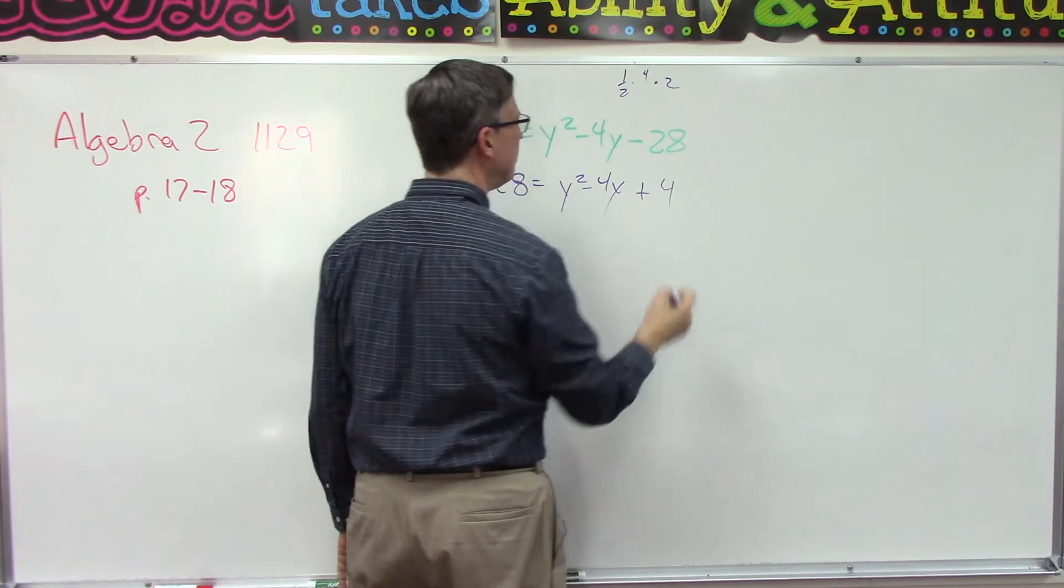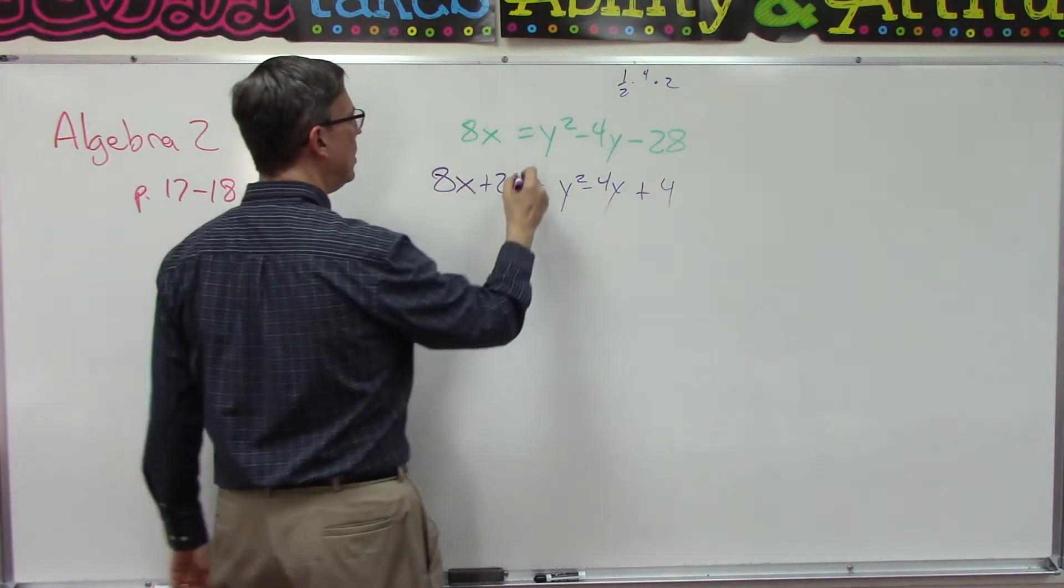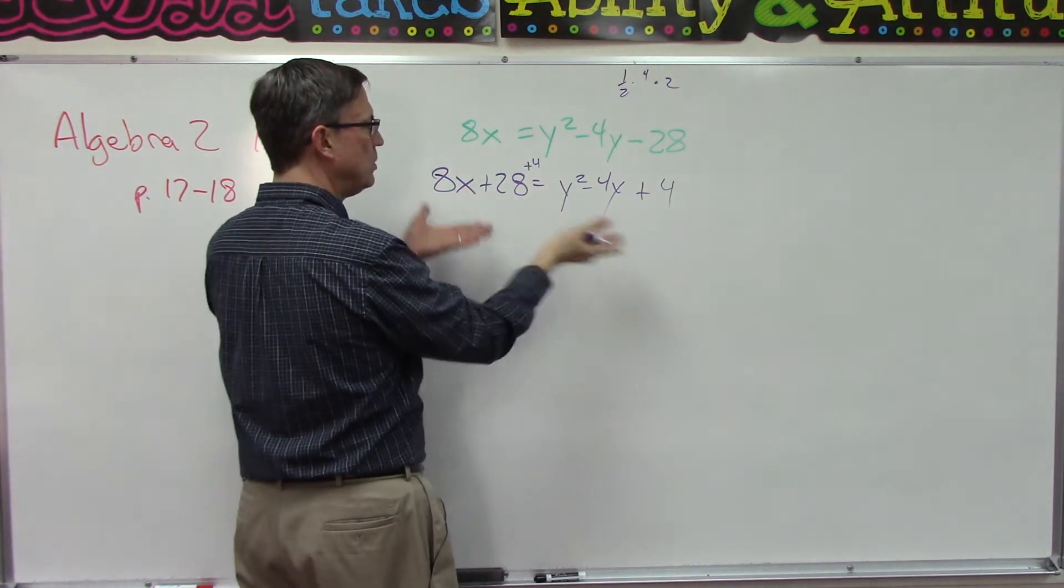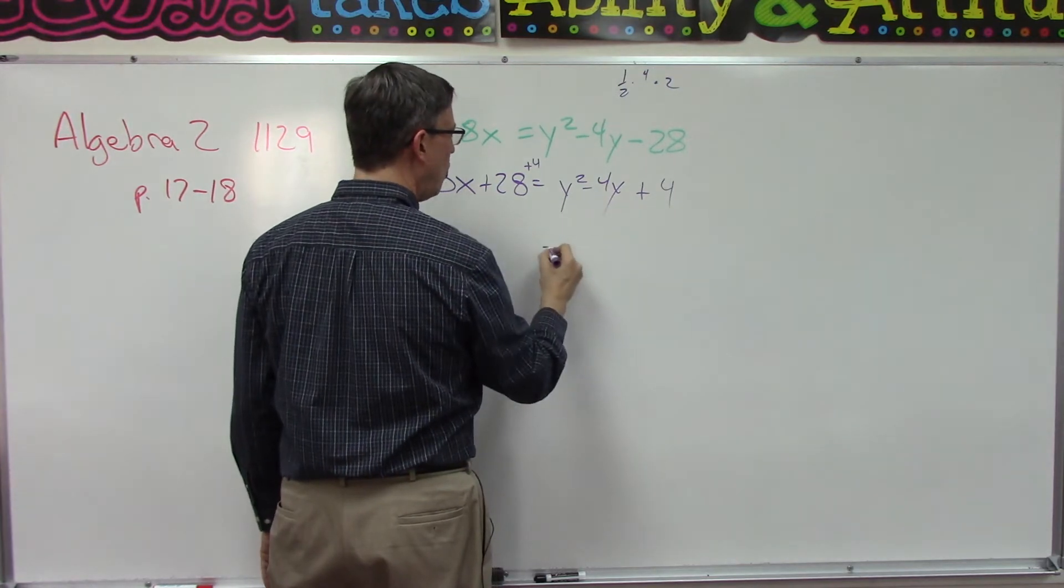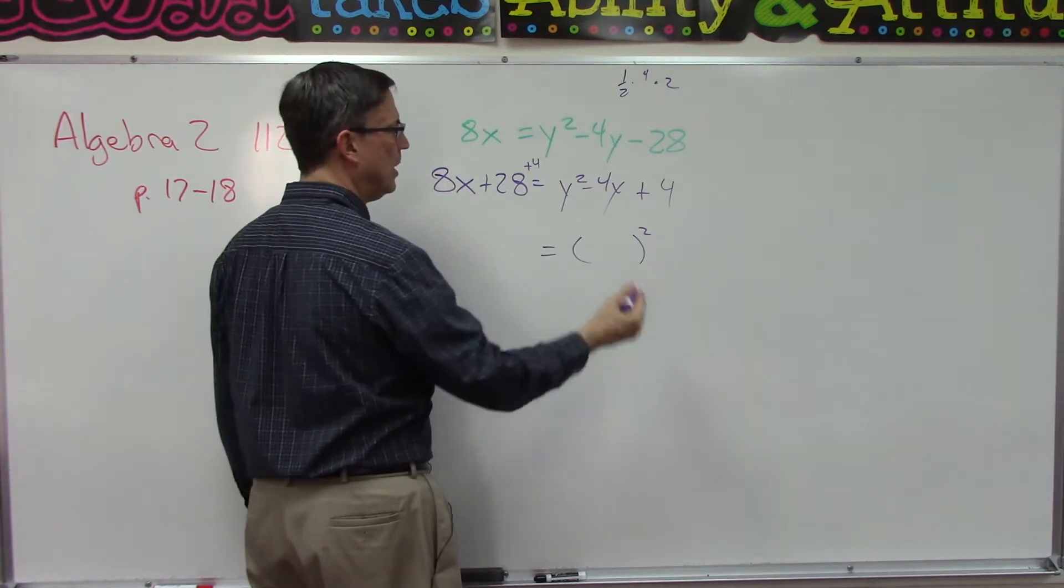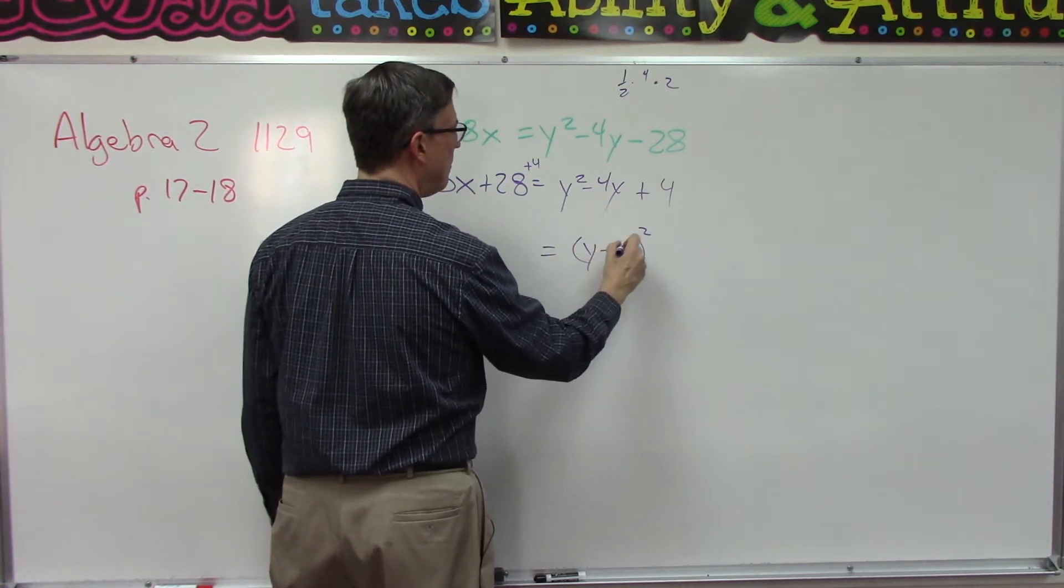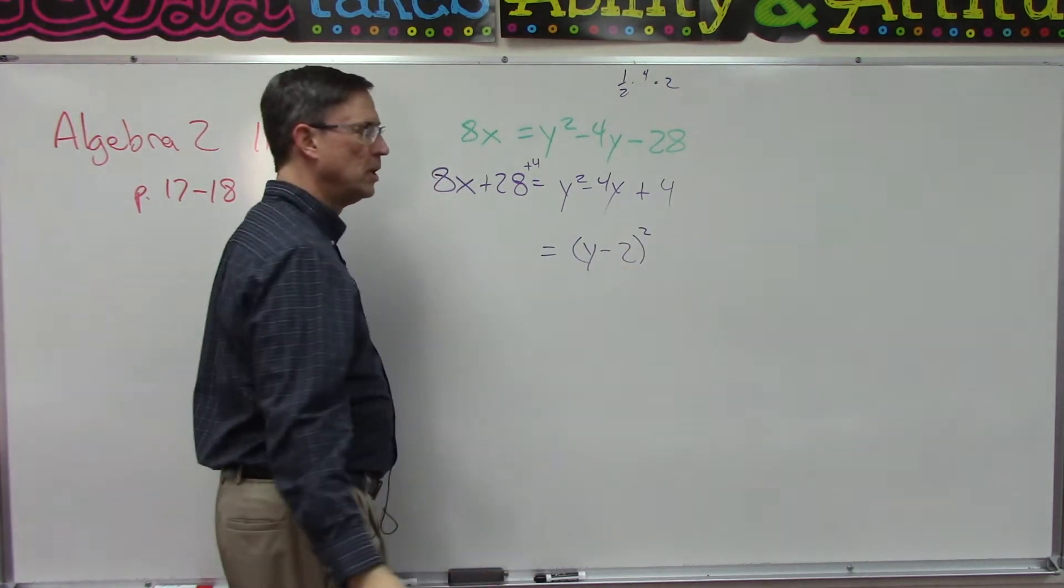but then we square it and we get 4. So we need to add 4 on the other side as well, because we're trying to keep it equal, trying to keep the two sides balanced. So we add 4. Now the whole reason we did that is we want to end up with a quantity squared. Because this is minus, I'm going to do y minus the square root of the 4, which is 2. So now let's think about